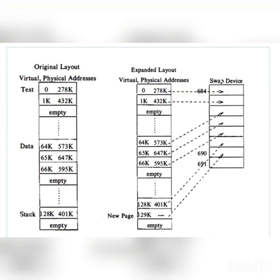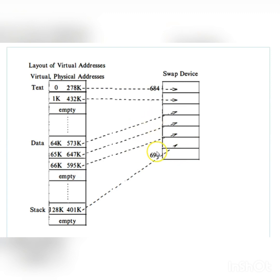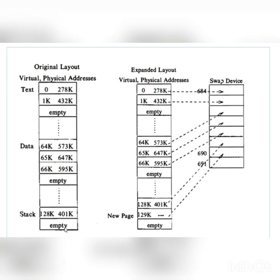Now let's see the expansion of swap memory. When a process executes the fork() system call, it creates one more child process and we need to expand the memory. In the first diagram we have text, data, and stack. In the expanded layout, a new page is added at 129K, which is empty. This new page is then added to the swap device — that is the expansion swap.